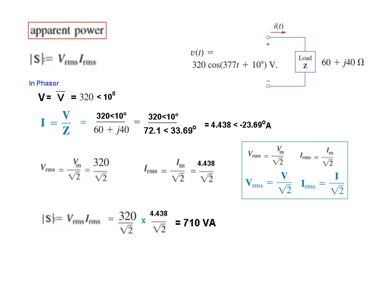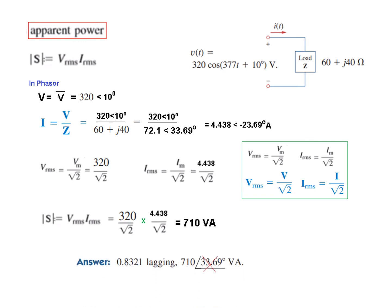The answer is 710 VA. Note: the textbook writes 710∠33.69°, but this is actually complex power — apparent power does not include the angle, only the magnitude. The magnitude is the same either way. I hope you were able to follow this; please give me your feedback. Thank you.